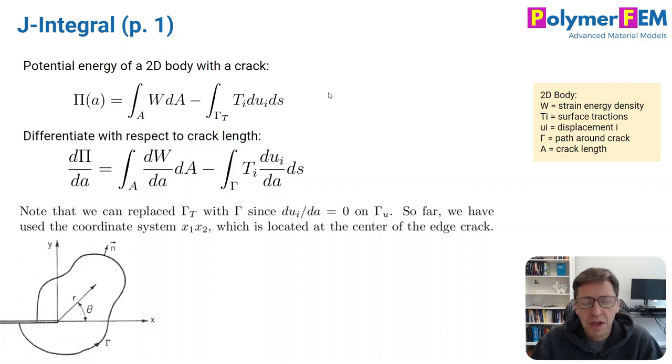We start by talking about something called the potential energy in a general two-dimensional body. That's the energy stored in the material and is defined by this equation. We are limiting ourselves to a 2D body. It has a crack in it. This equation here doesn't really talk about the crack, but here it is.